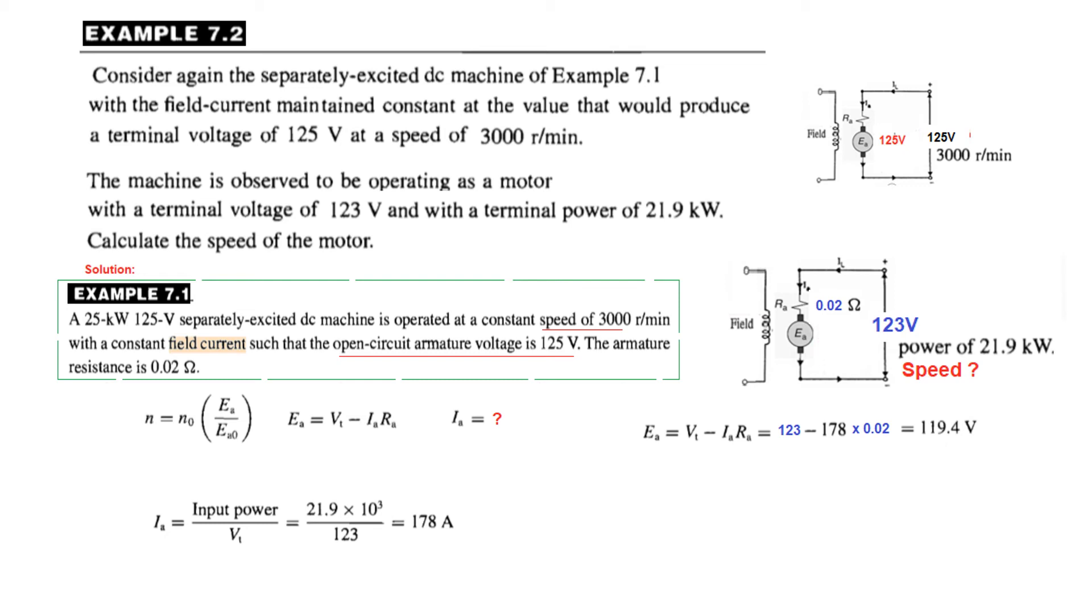So now if you plug it in here, we can find the value of the speed. So N equals N0, Ea. We found 119.4 from here. Ea0 the reference voltage is 125 and 3000 is the RPM. Therefore the new RPM will be 2866 revolutions per minute.